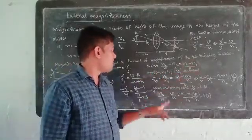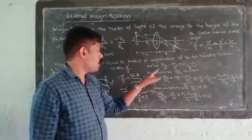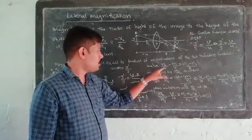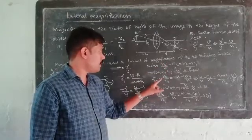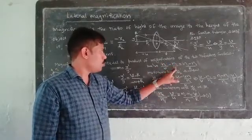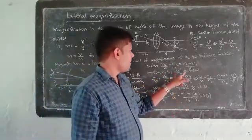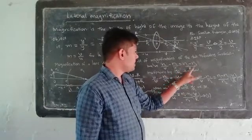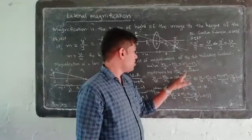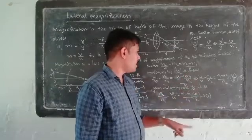N2 by V minus N1 by U is equal to N2 minus N1 by R. Now the formula: throw out U by N2 and multiply. U by N2 multiplied by N2 gives N2 cancel, leaving U by V. Then U by V minus U times N1 by N2 is equal to N2 minus N1 by R. We have equation 1.